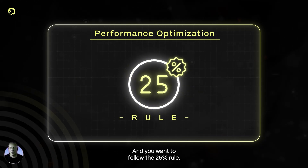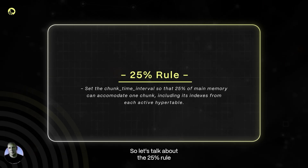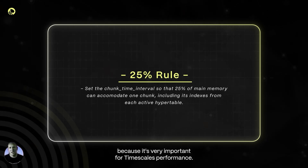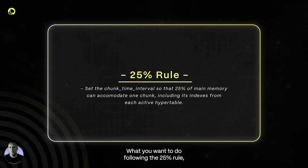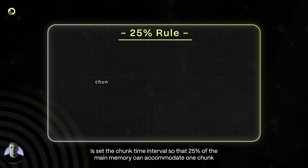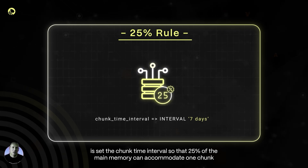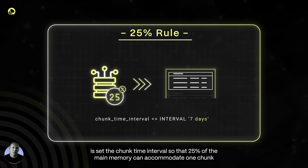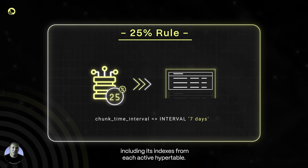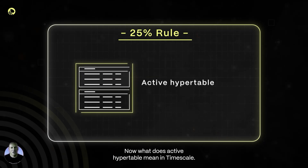You want to follow the 25% rule, which is very important for TimescaleDB performance. Following the 25% rule means setting the chunk time interval so that 25% of the main memory can accommodate one chunk — including its indexes — from each active hyper table.